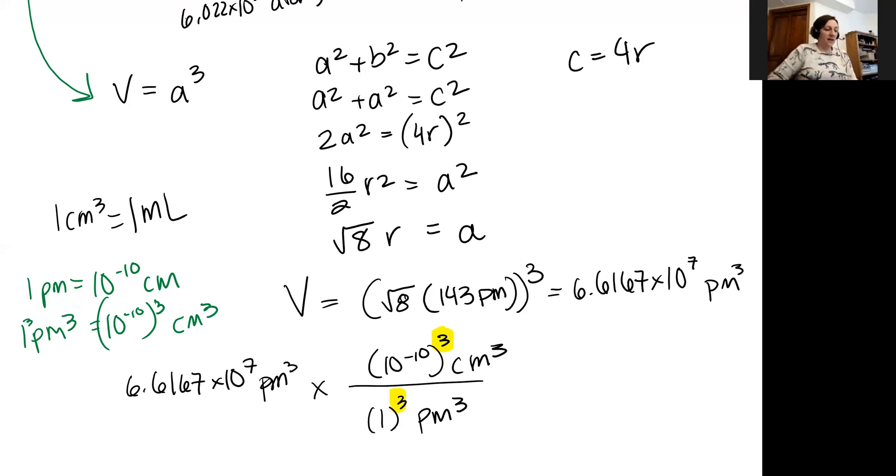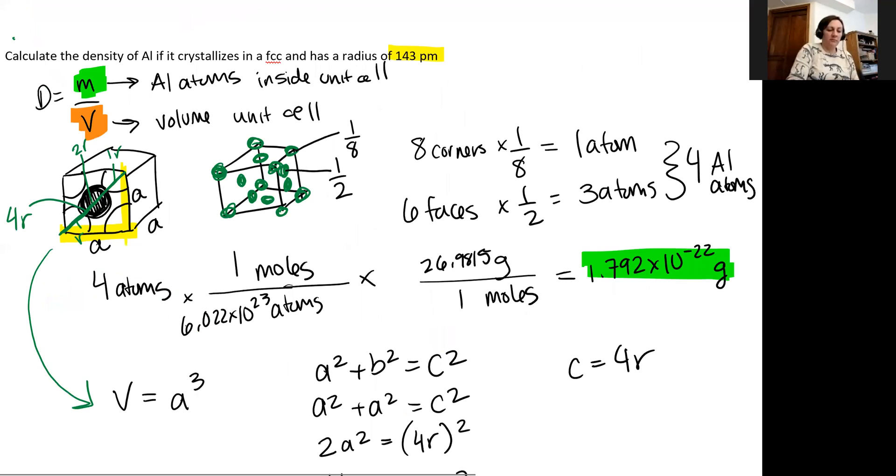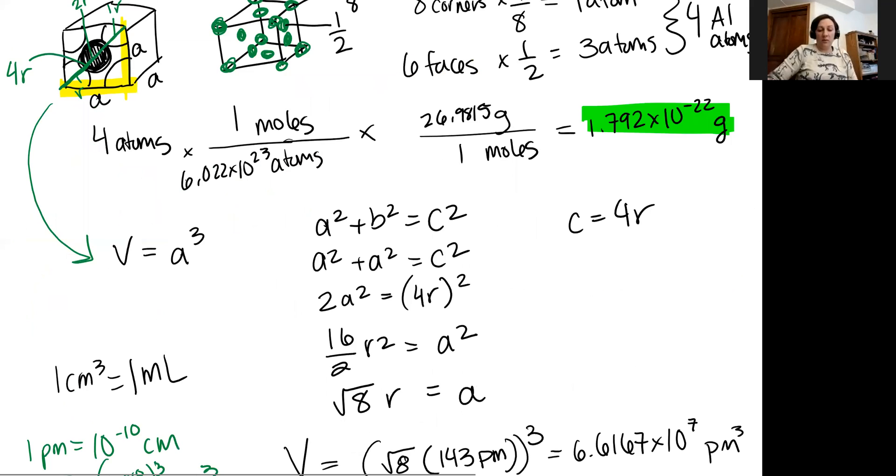So now that we have this set up, this is going to equal, I'm going to start rounding here, 6.618 times 10 to the negative 23 centimeters cubed. All right. Now we finally have the volume we were looking for to match the volume in our density equation.